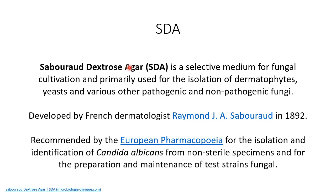Sabouraud Dextrose Agar is a selective medium for fungal cultivation, primarily used for the isolation of dermatophytes, yeast, and various other pathogenic and non-pathogenic fungi. It was developed by French dermatologist Raymond Sabouraud in 1892, and it is recommended by the European Pharmacopoeia for the isolation and identification of Candida albicans from non-sterile specimens and for preparation and maintenance of test strains of fungi.